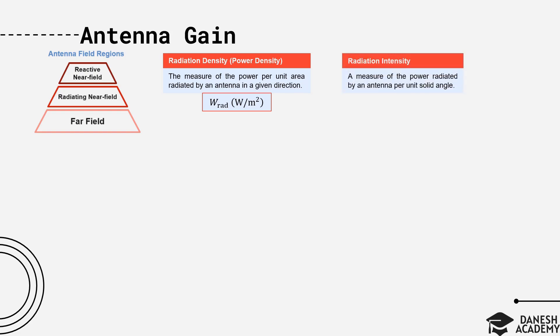The other important parameter is radiation intensity, which is a measure of the radiated power per unit solid angle. It is shown by U, which is equal to power density W times R squared, and measured in watts per unit solid angle. R here is the distance from the antenna to the point where the power density is being measured. To understand the unit solid angle, think of a sphere with radius R, and consider a circle on the surface of the sphere, where the area of that circle is R squared. That corresponds to a unit solid angle.